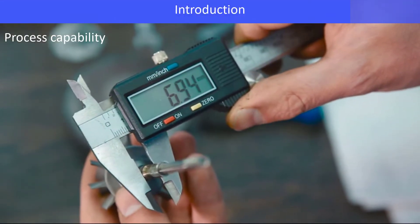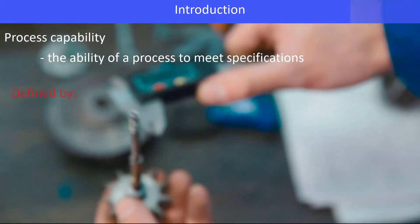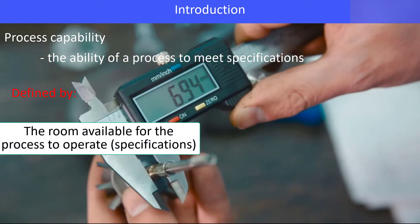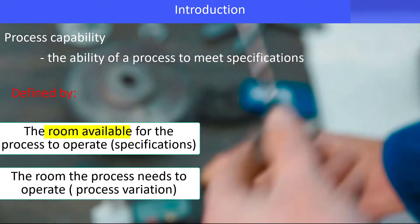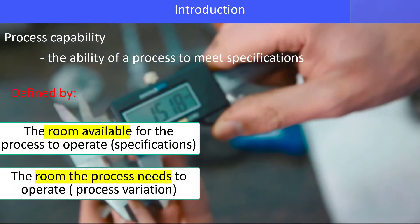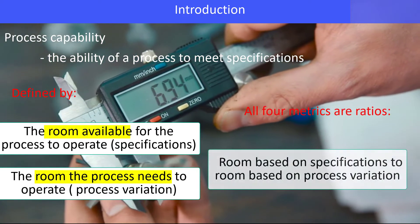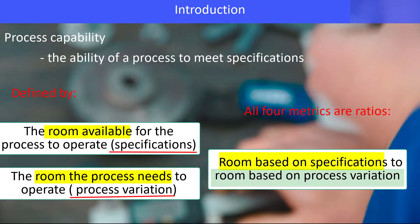So let's start with process capability. What is it? It's the ability of a process to meet specification. What it's defined by is the room available for the process to operate — that's the specifications — and the room the process needs to operate, which is the process variation. So all four metrics are ratios of the room based on the specification to the room based on process variation.